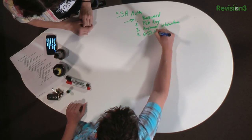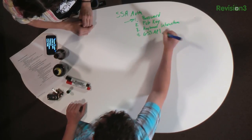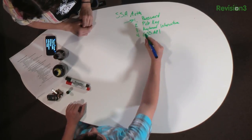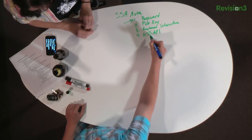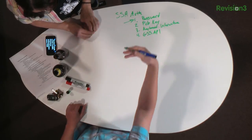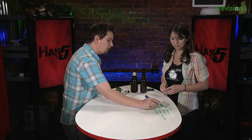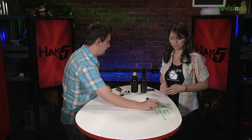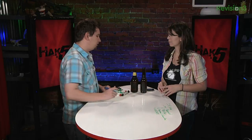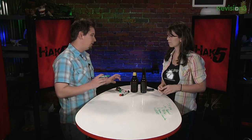The last one being GSSAPI — that stands for Generic Security Services — and it's how you can implement Kerberos or NTLM. We're going back to talking about password authentication, because we're going to be tying it in with a module that will allow us to use our YubiKey.